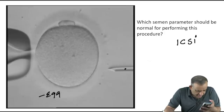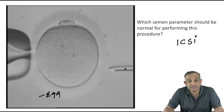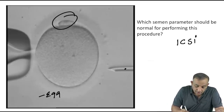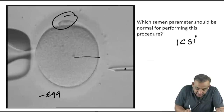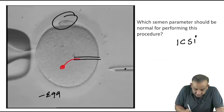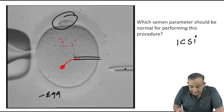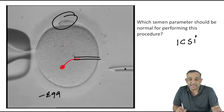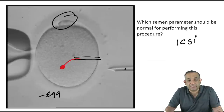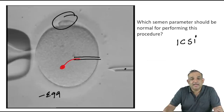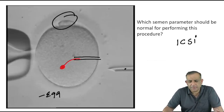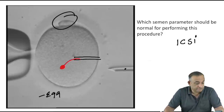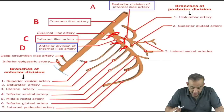Always keep the polar body at 12 o'clock during ICSI. The area near the polar body contains the genetic material and the mitotic spindle — don't inject the sperm there. When you inject with the needle at 6 o'clock, the sperm falls away from the mitotic spindle, protecting the genetic material.